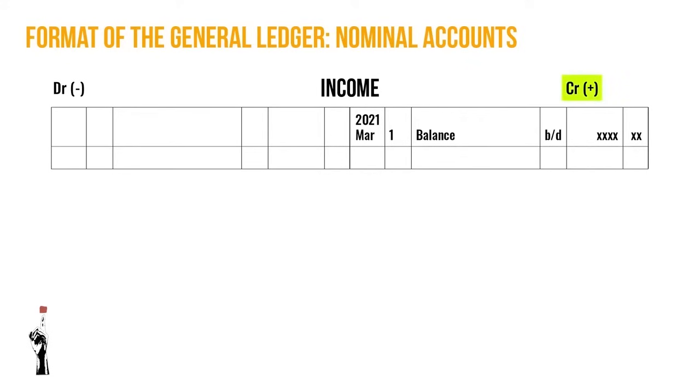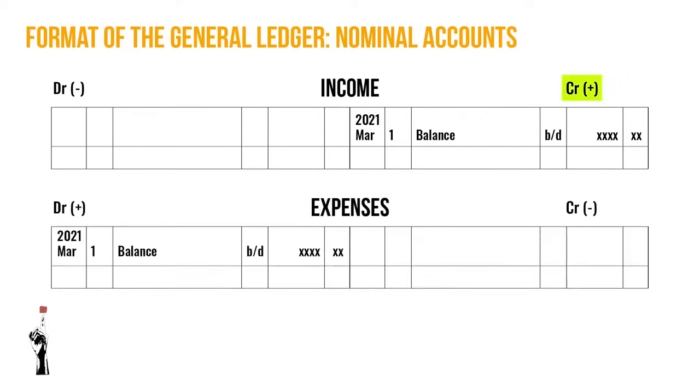Next up let's look at the nominal accounts. Income is first in line and increases on the credit side. Expenses are the last accounts of the general ledger and increase on the debit side.